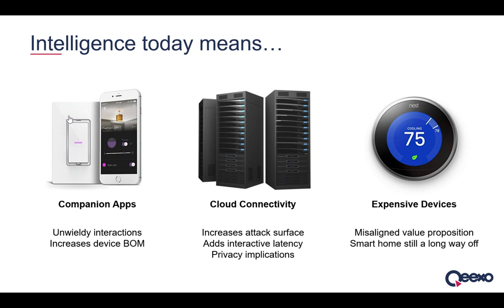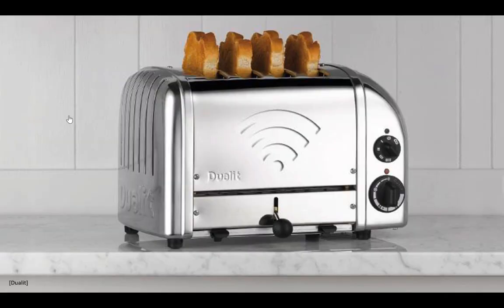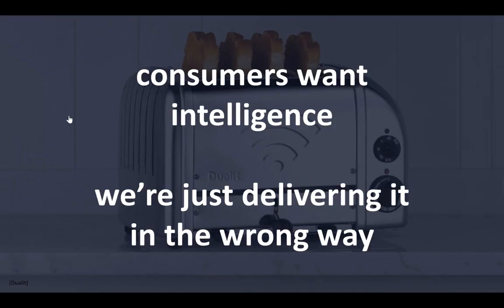Right now, the value proposition is high cost for small benefit. We should really be aiming for small cost where each little device has a little sprinkling of intelligence. Probably the biggest IoT meme is the smart toaster, the device nobody wants. But I would argue that people actually wouldn't mind a smart toaster if it makes better toast from sensing and machine learning. What they don't want is a $200 internet-connected toaster. They do want better, faster toast, and they might be willing to pay a few bucks more. Only when we have this value proposition right are we going to see broad adoption of smart environments and IoT devices.